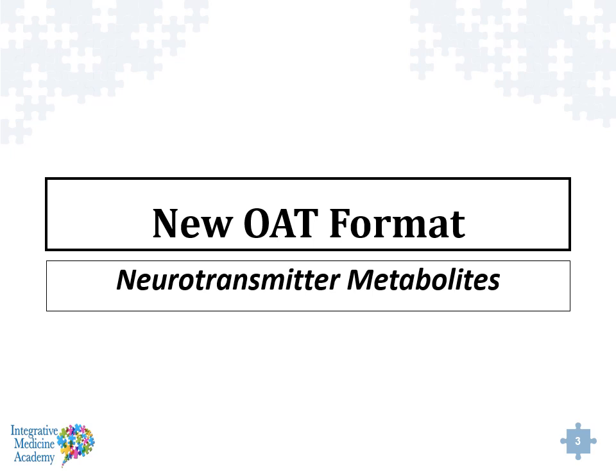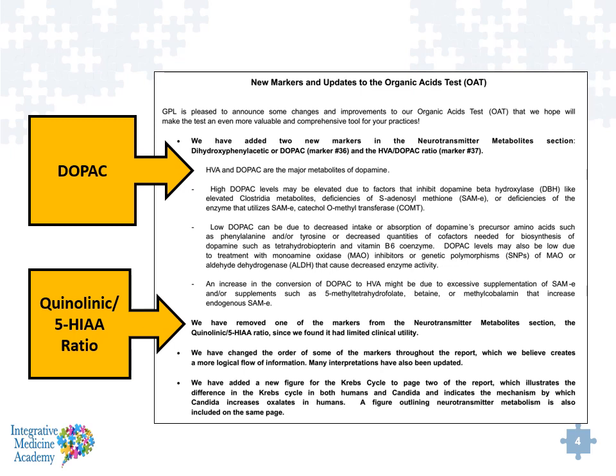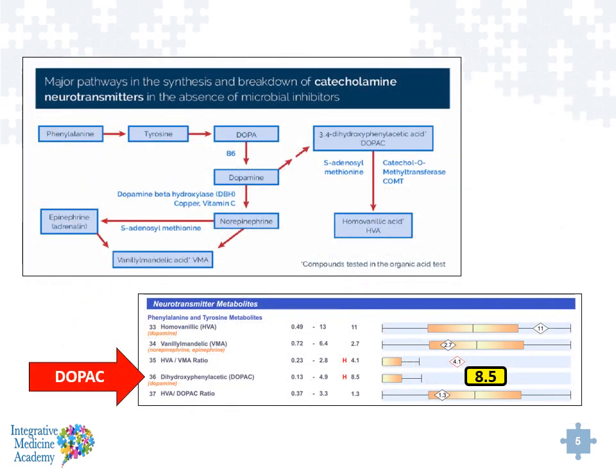In the updated format for the organic acids test, one of the things that is now new on the OAT test is this marker called DOPAC. DOPAC stands for 3,4-dihydroxyphenylacetic acid. It's a chemical that links dopamine to homovanillic acid. The reason it's on the test is specifically to identify the potential presence of SAMe deficiencies — S-adenosylmethionine — as well as a genetic SNP, a polymorphism in the catecholamine-O-methyltransferase enzyme, which could also influence DOPAC levels. It's a very comprehensive, complicated part of the organic acid test and of biochemistry.